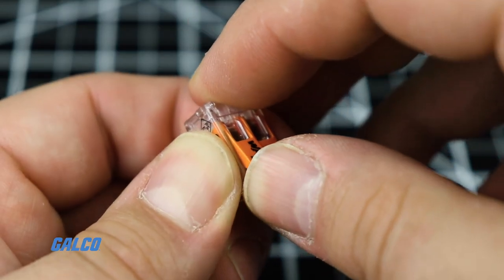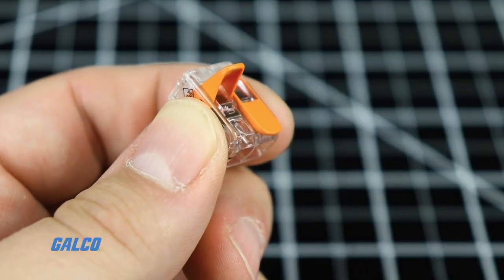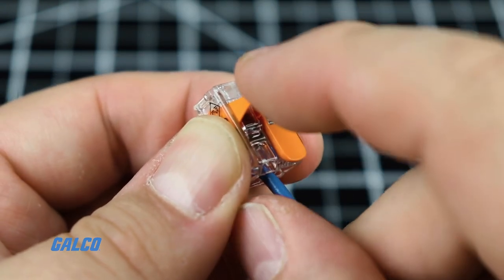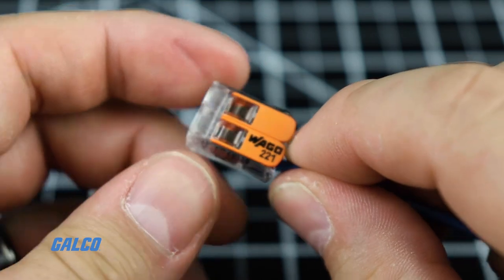Connections are terminated with a super simple lever mechanism. Pull the lever on the connector up, insert the conductor, and push the lever back down.